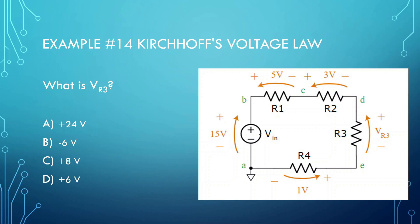Now let's look at the Voltage Law. What the voltage law is saying is whatever this battery is — in this case, 15 volts — everything else needs to add up to those 15 volts. Everything in series needs to add up. So if we have 5 going this way, 3 going this way, and 1 over here, we have 1, 6, and 9. That means this one needs to be 6 volts — positive 6 volts, going from negative to positive. So we have 5, 3, 6, and 1, which adds up to 15 volts.